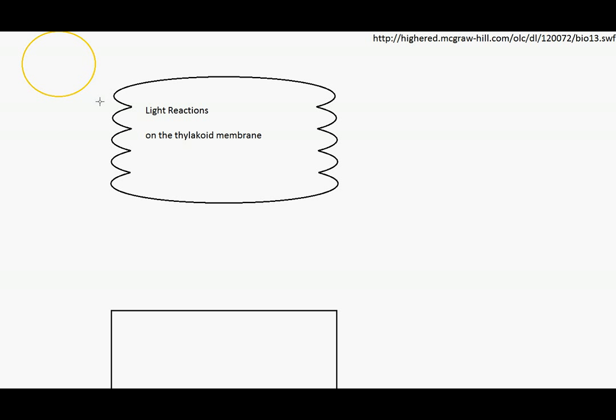There's our first part of the diagram. We also want to include an important part of that, and that is sunlight. That is obviously necessary for plants to do photosynthesis. As that sunlight comes streaking down, it's going to strike the photosystems on the thylakoid membrane. Here's your photon of light coming down to energize the light reactions.